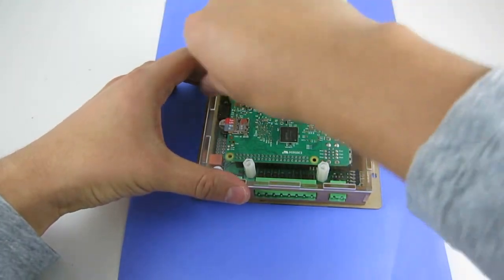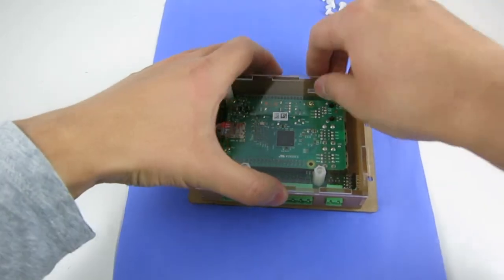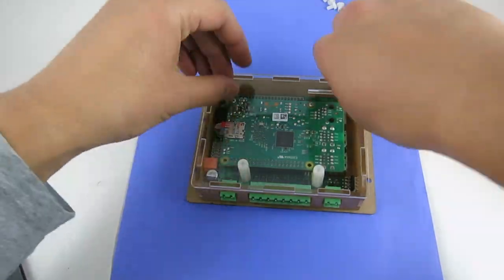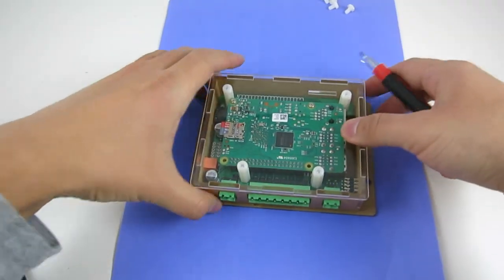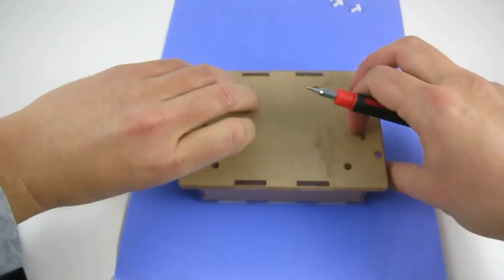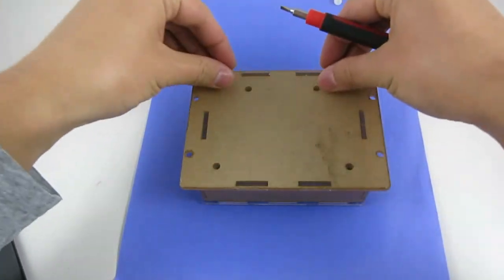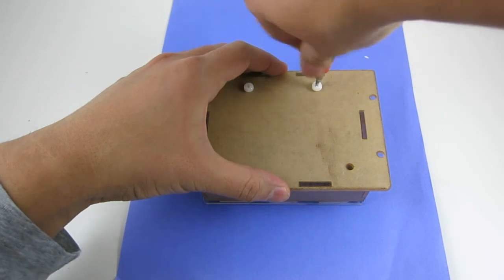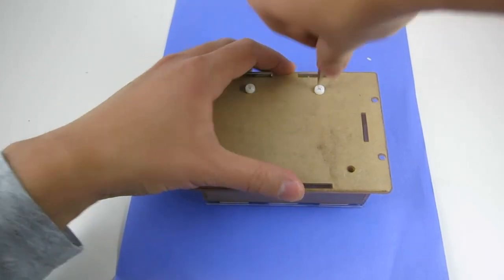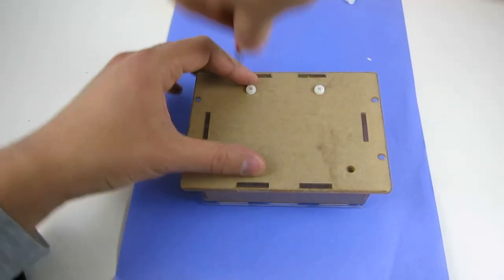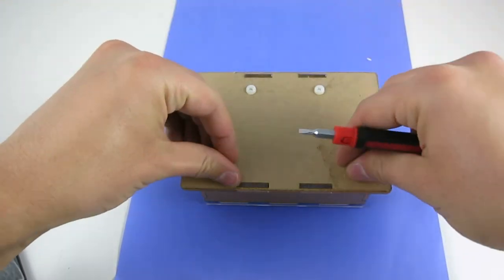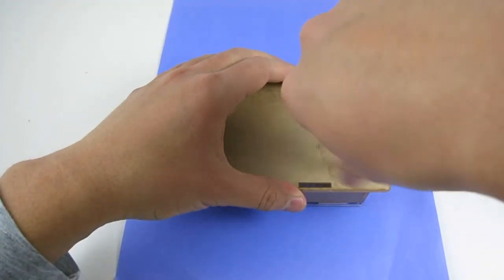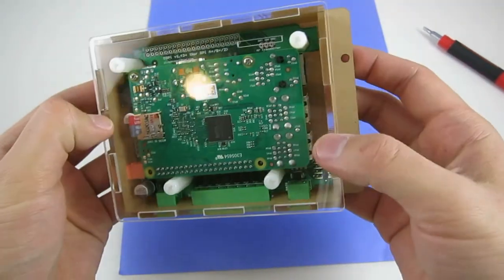There will be four screws on the top and four screws on the bottom. So when you flip the side, just be very careful not to let the enclosure collapse. Just hold everything together while you flip the enclosure upside down.